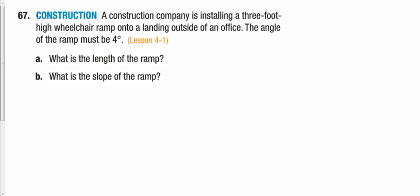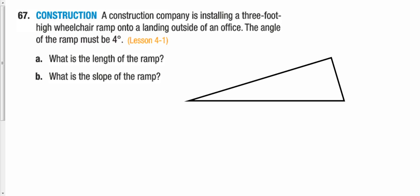We left off right here with this word problem. Whenever you have a problem like this, be sure to draw a picture. A construction company is installing a three-foot-high wheelchair ramp into a loading dock outside of an office. When we draw this, we're going to have a right triangle. This is going to be a straight line, with a right angle, and this angle is going to be my four degrees.